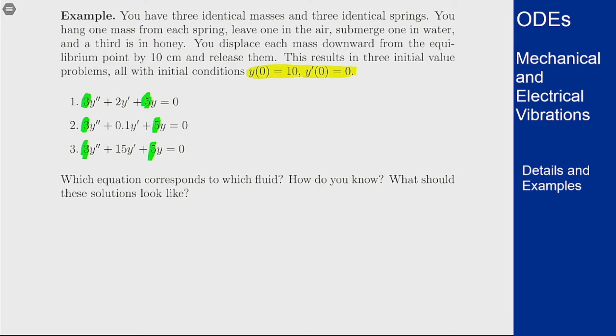And that makes sense because we're dealing with identical mass and identical springs. The mass is the coefficient of y double prime and the spring constant is on the y term. So these should be the same if they are the same mass and the same spring.